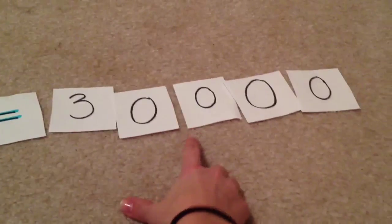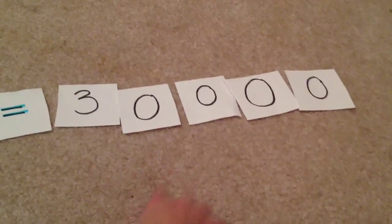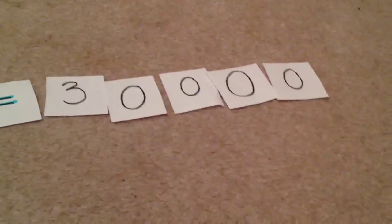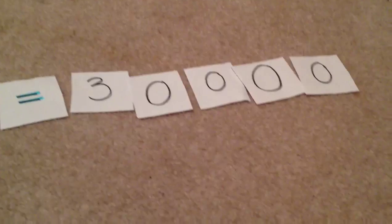And then we tack on our three zeros that we stole, and then we would have 30,000 as our answer. So although this trick doesn't work for all math equations, for ones that end in zeros like that, it works really well.